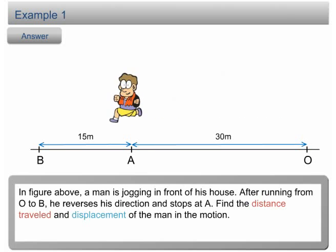After running from O to B, he reverses his direction and stops at A. Find the distance traveled and the displacement of the man in their motion.